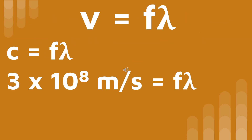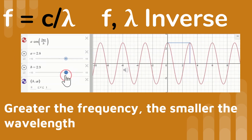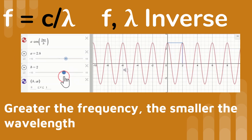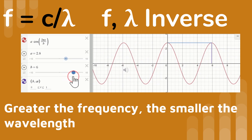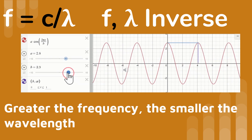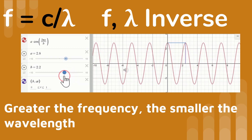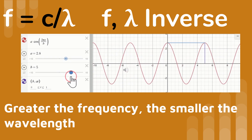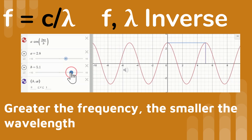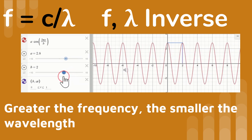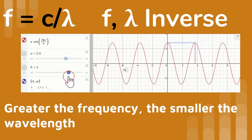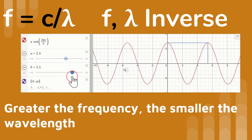Since light is a wave, we can find its velocity by multiplying frequency times wavelength. In order to relate frequency and wavelength, we need to separate frequency and wavelength in the equation. We do this by solving for frequency. When we do, we find there's an inverse relationship between frequency and wavelength.